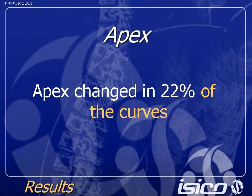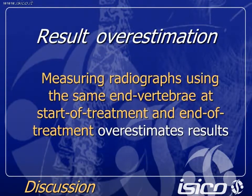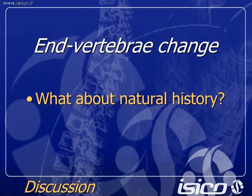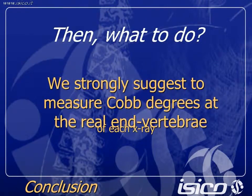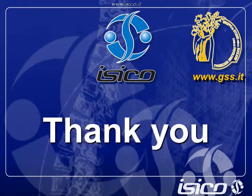The end vertebra changed in 22% of the curves. According to our results, the end vertebra can modify during therapy. Measuring radiographs using the same end vertebra at start-of-treatment and end-of-treatment often overestimates results. We don't know what is happening in natural history — we just verified this in patients treated with brace and with exercise, but nobody ever checked what is happening in natural history. We strongly suggest measuring Cobb degrees at the real end vertebra of each X-ray. Thank you.